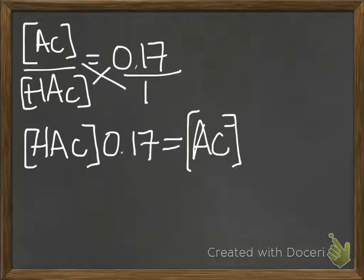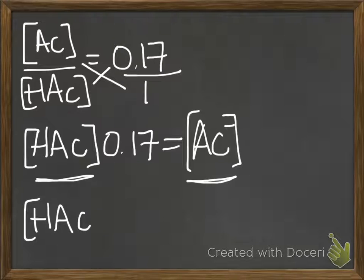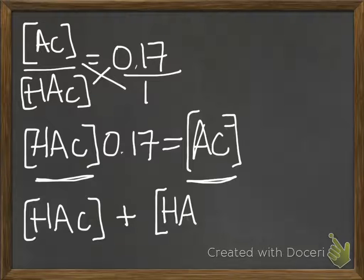And that gives you some kind of equivalency. So for every acetate molecule that you have, it's 0.17 times the concentration of the acetic acid. So you can rewrite this equation so that you only have one unknown.